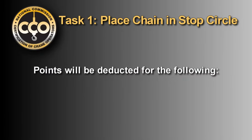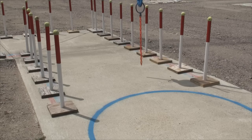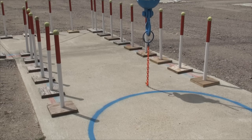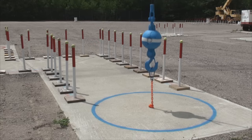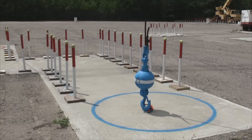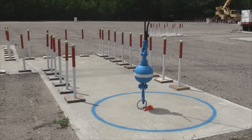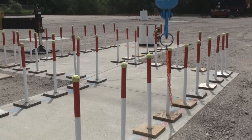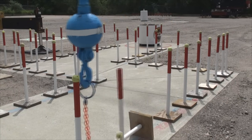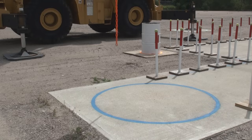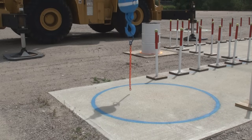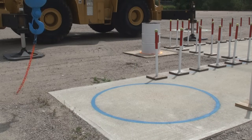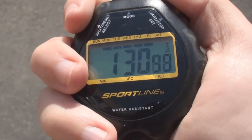Points will be deducted for the following: dragging or contact of the chain outside of the circle; hook or ball touching the ground either inside or outside of the circle; hook, ball, or chain contacting any part of the course or crane; lifting the chain off the ground after initial contact with the ground inside the circle; exceeding optimum time.